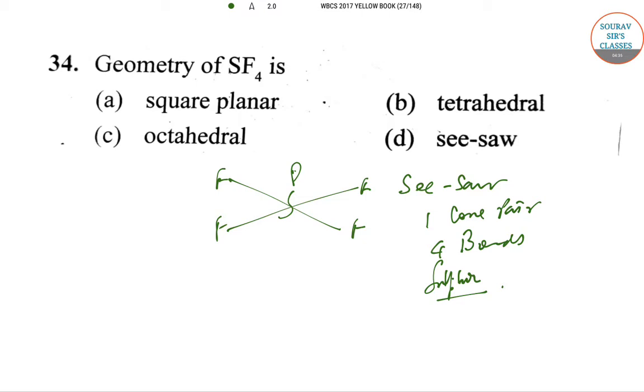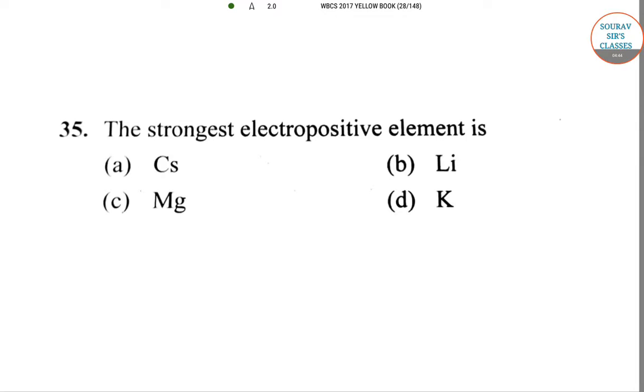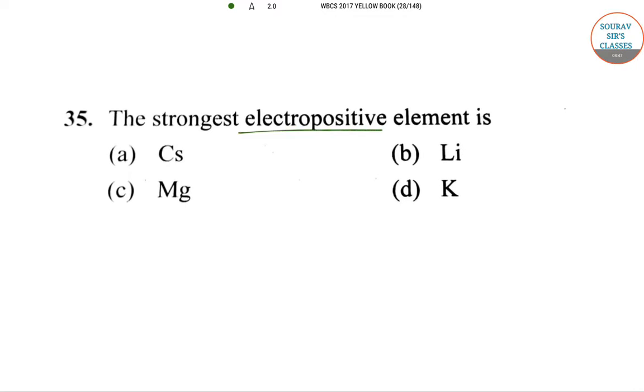The strongest electropositive element: Electropositive elements tend to lose their electrons and form ions, like univalent or divalent alkali metals. Cesium (Cs) has the largest size and it is very easy for cesium to lose electrons and form ions with respect to the large orbit.